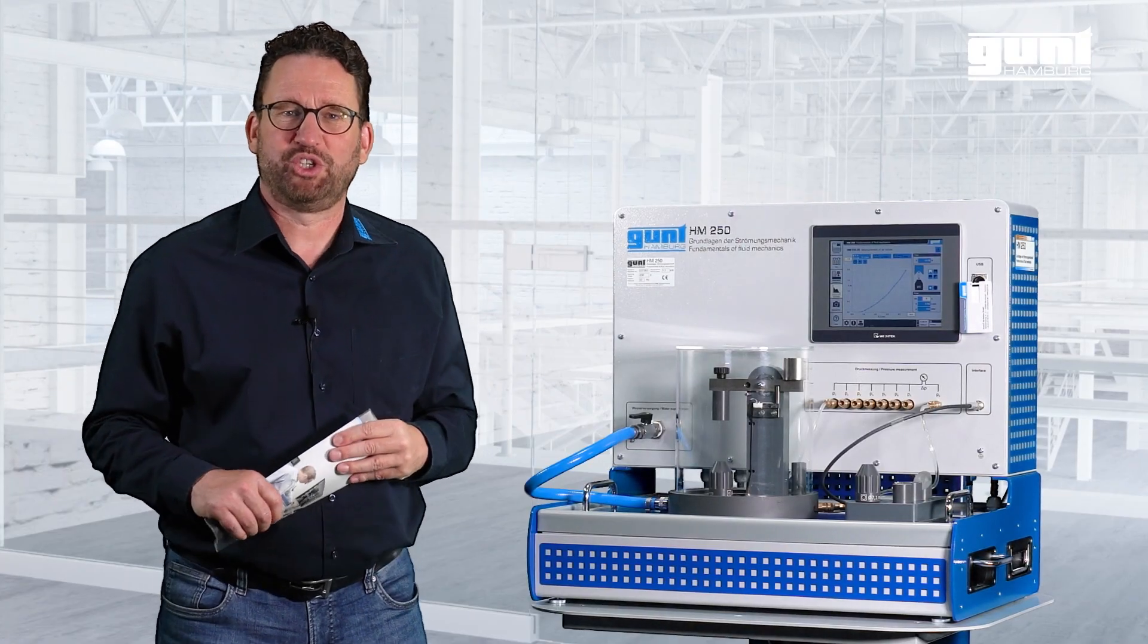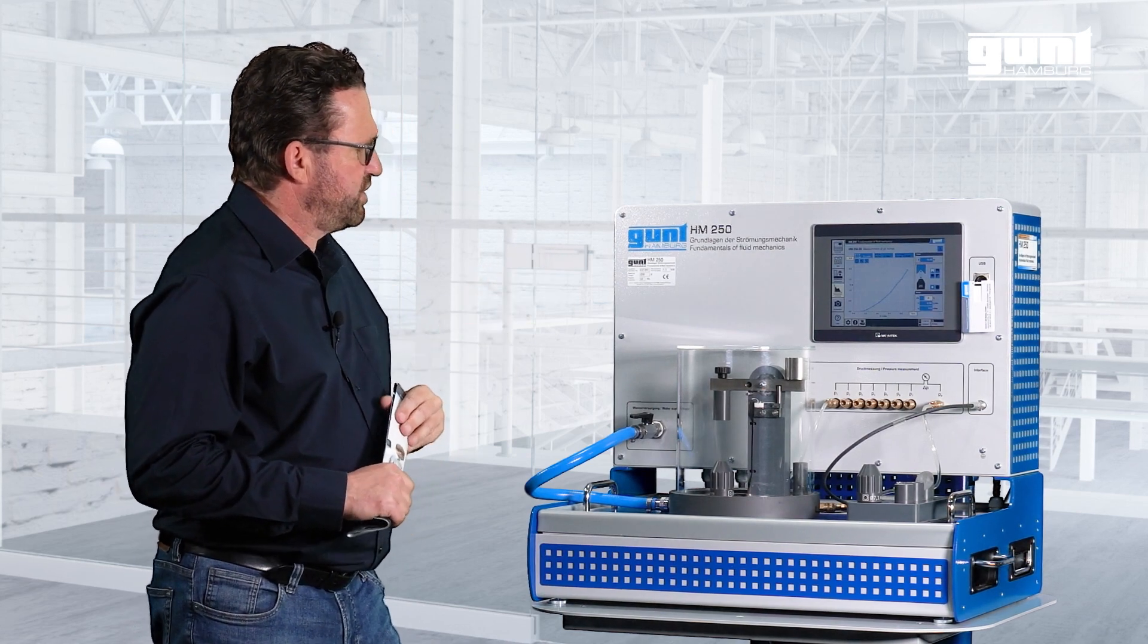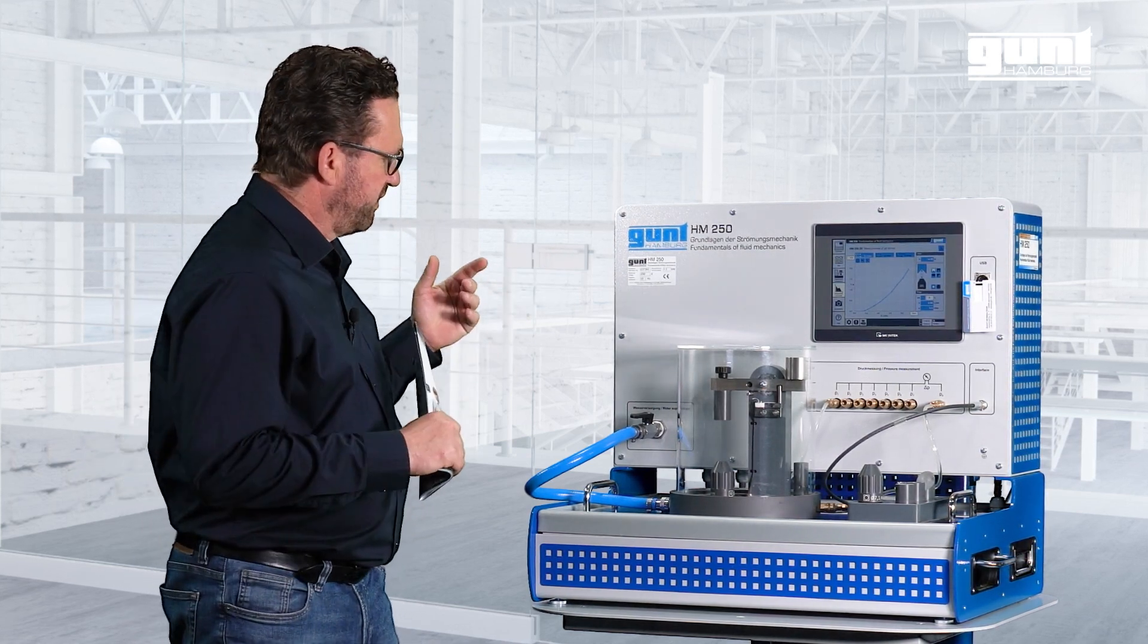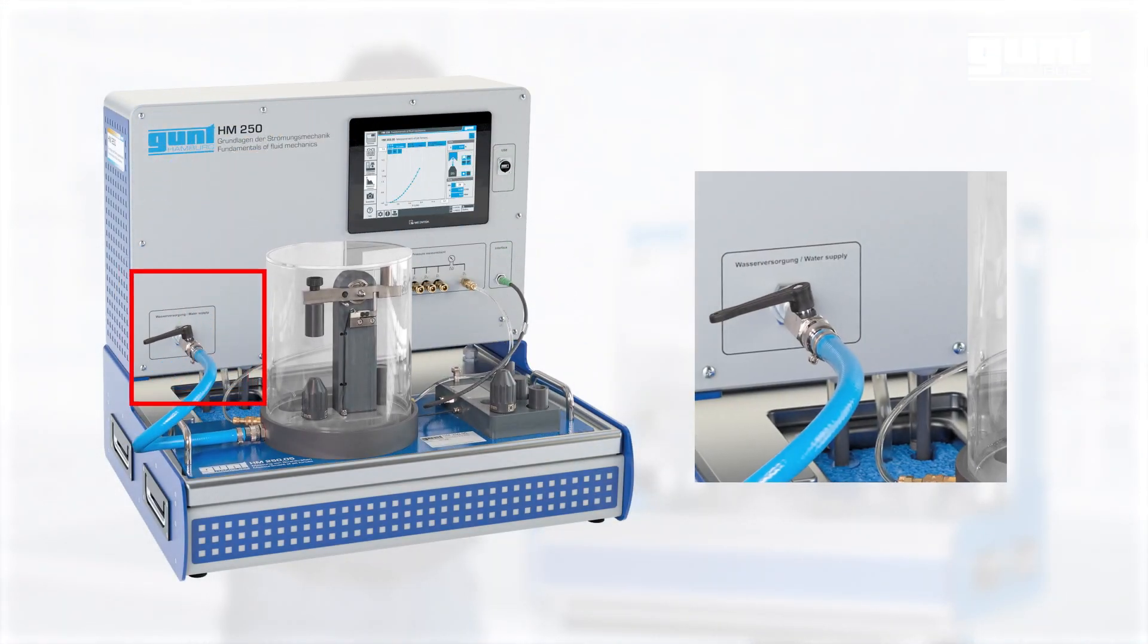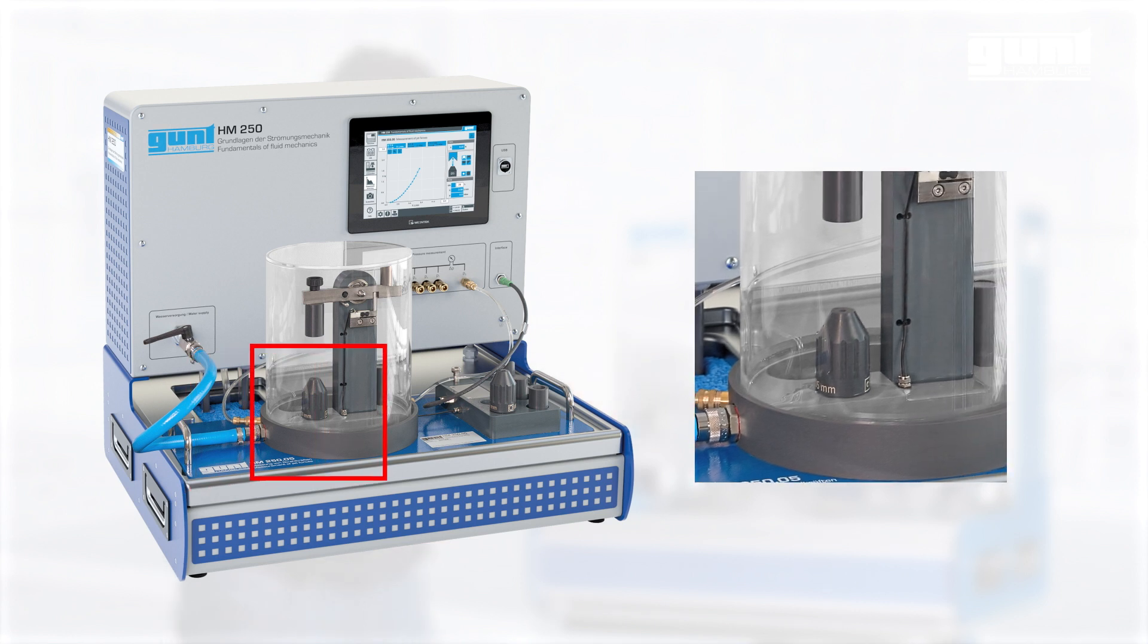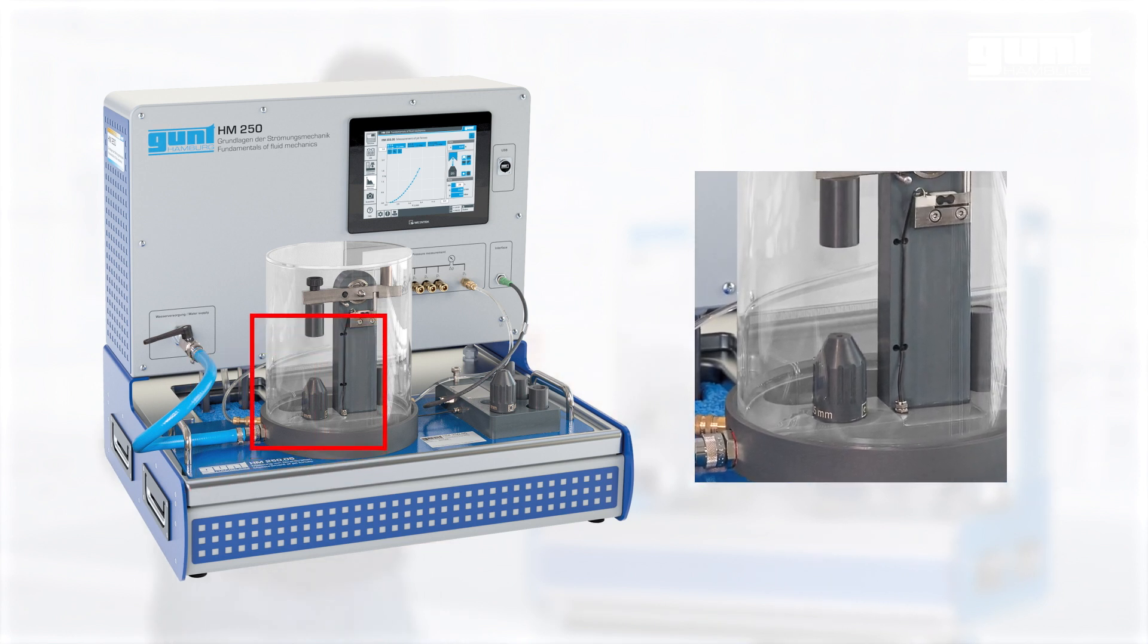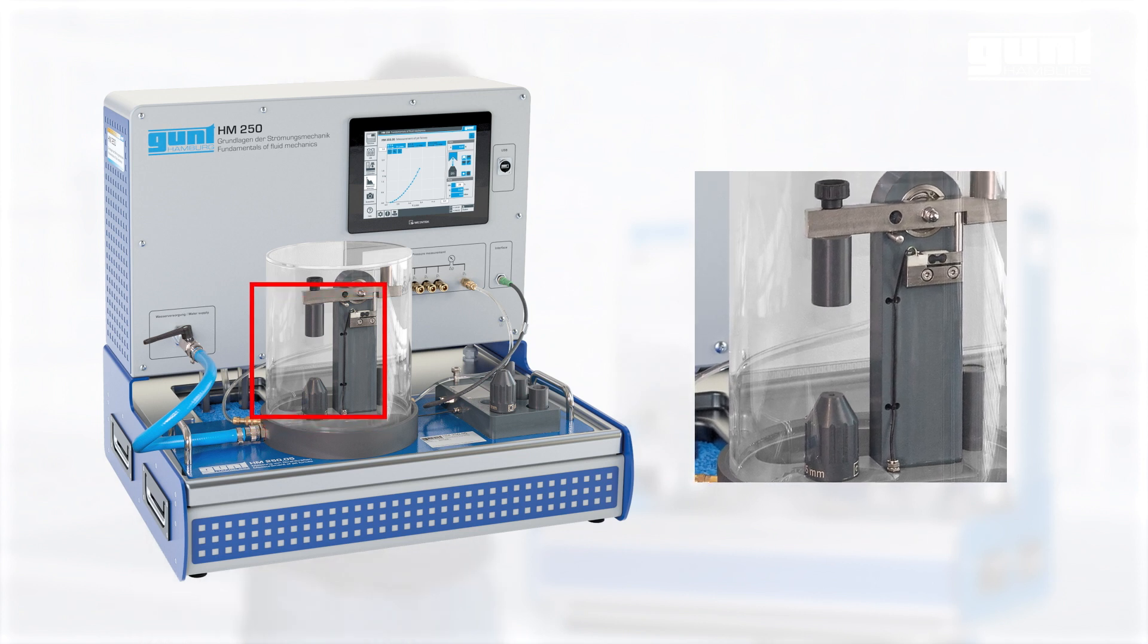Let me show you the experimental unit and explain some of its features. The pump of the HM250 base unit supplies a steady flow of water, which is measured by our internal flow meter. This water is then accelerated upwards through this nozzle here and of course knowing the diameter of the nozzle we can quite easily calculate the velocity.